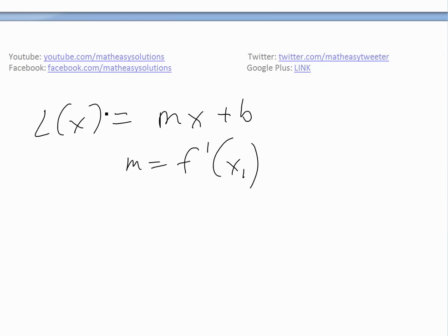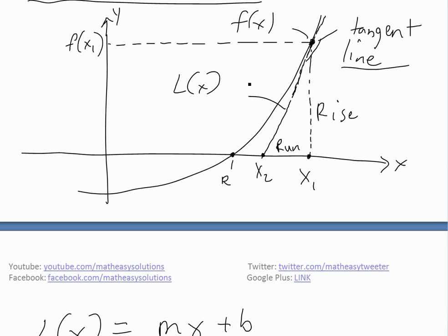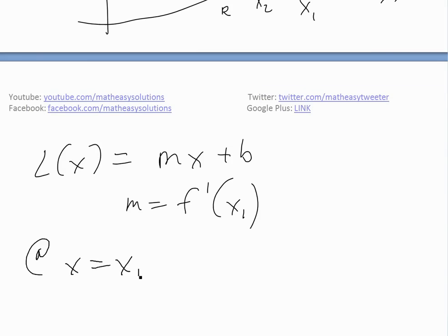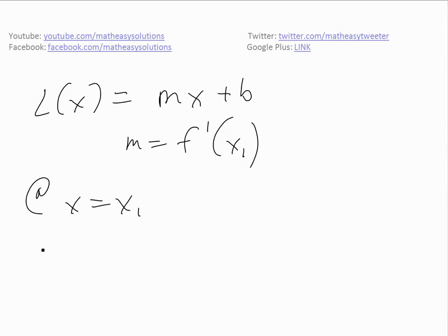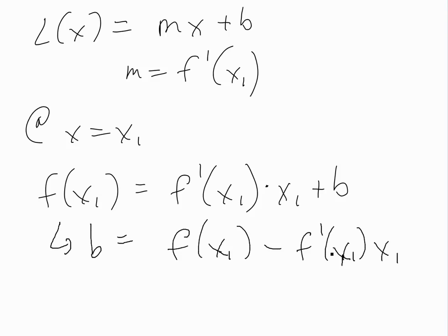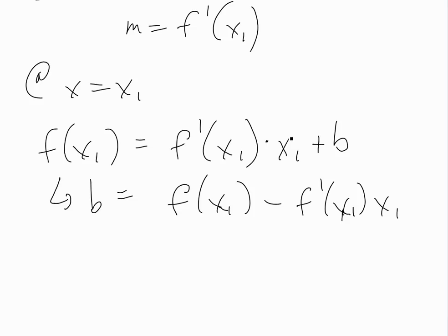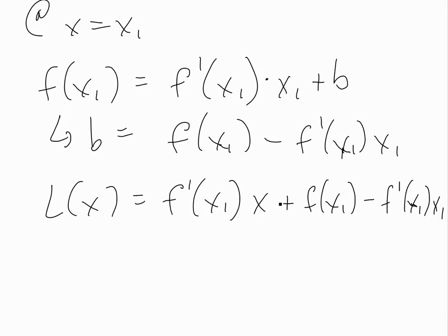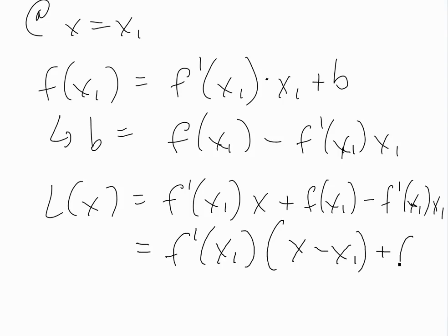To solve for b, we know that at x equals x1, L of x1 equals f of x1. So f of x1 equals f prime of x1 times x1 plus b. Rearranging for b, we get b equals f of x1 minus f prime of x1 times x1. Plugging back in and simplifying by collecting like terms, the equation of our tangent line is: L of x equals f prime of x1 times (x minus x1) plus f of x1.